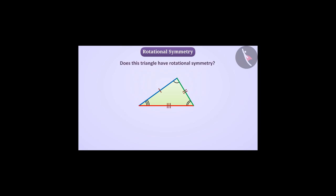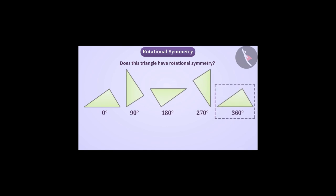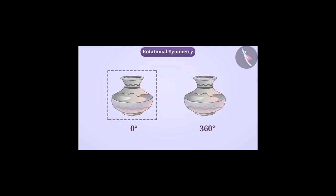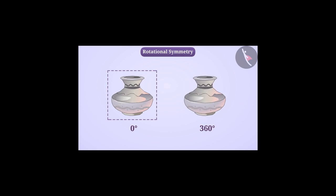Now see this triangle. Not all its sides are equal, and not all its angles are equal either. Does this triangle have rotational symmetry? When we rotate this triangle by 360 degrees — one revolution — only in that case does the triangle look exactly in the same state as before. We can say that this triangle has a rotational symmetry of order 1. Normally, each shape after rotation of 360 degrees comes back to its previous position as if it was not rotated at all. Hence, each shape has a rotational symmetry of order 1.